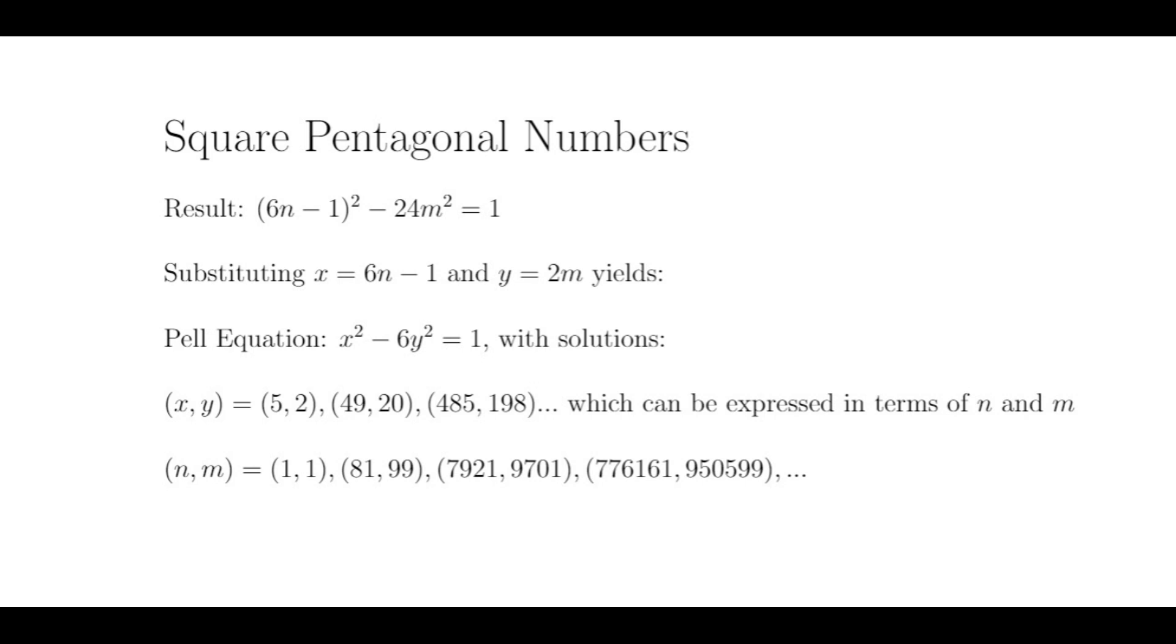If we calculate a list of solutions and ignore any non-integer solutions, we get (n,m) equals (1,1), (81,99), (7921,9701), (776161,950599), and so on.